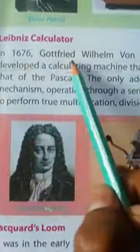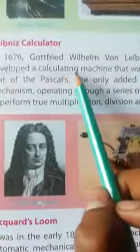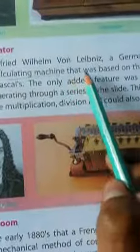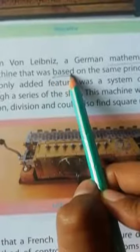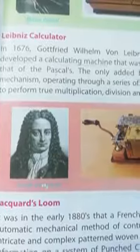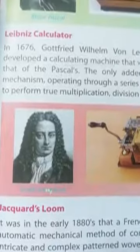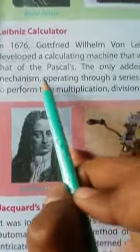1676 में, एक जर्मन गणितज्ञ, Gottfried Wilhelm von Leibniz ने एक गणना करने वाली मशीन विकसित की. That was based on the same principle as that of Pascal's. Based means आधार या आधारित होना. Principal means सिद्धान्त. जो पास्कल के उसी सिद्धान्त पर आधारित थी. यानि कि जो आपने पीछे पास्कल का सिद्धान्त पढ़ा है, ये गणना यंत्र भी उसी सिद्धान्त पर आधारित था.